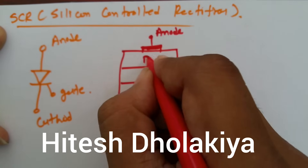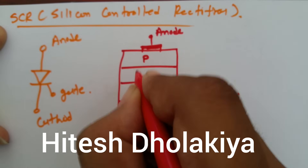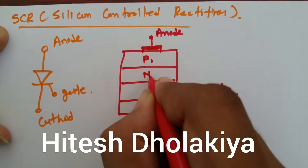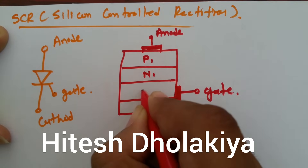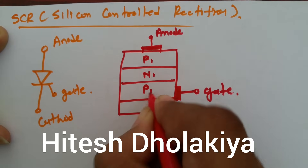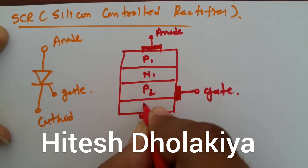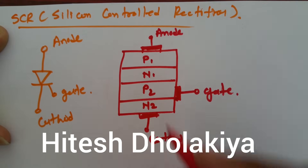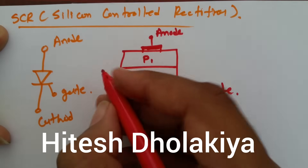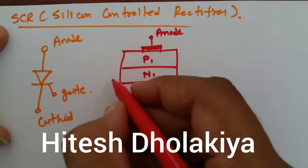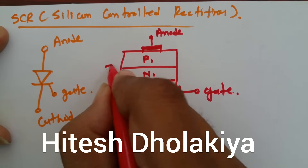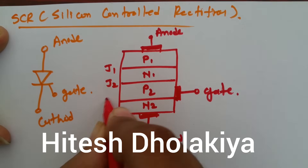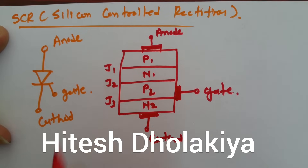The internal structure consists of four layers: this is P-type material P1, this is N-type material, this is P-type material, and this is N-type material. So it is having three junctions: J1, J2, and J3.